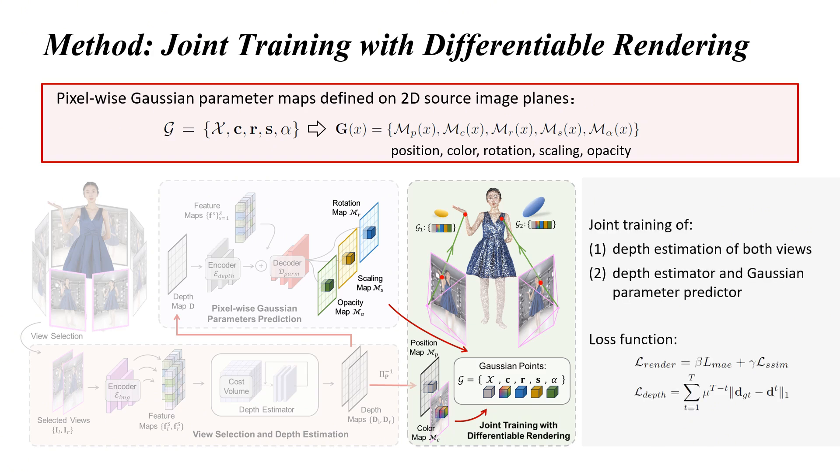The fully differentiable framework enables joint training from two perspectives. First, the depth estimation of both source views. Second, the depth estimator and the Gaussian parameter predictor.